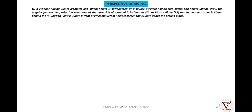I have a question about perspective drawing. A cylinder having 70mm diameter and 40mm height is surmounted by a square pyramid. The square pyramid is having 40mm base and 50mm height. Draw the angular perspective projection when one of the base edges of the pyramid is inclined at 30 degrees to the picture plane and its nearest corner is 30mm behind PP. Station point is 35mm in front of PP, 25mm left of the nearest corner, and 110mm above the ground plane.